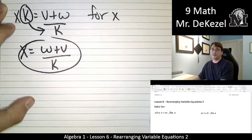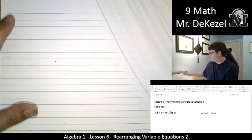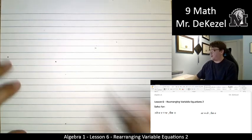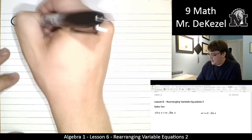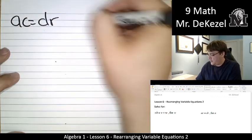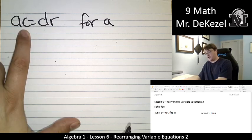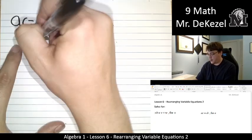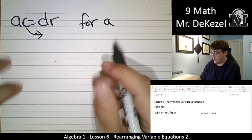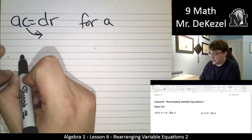v plus w, w plus v, it's all the same. All right, let's do another one. We have ac is equal to dr, and we're solving in this case for a. So the c is on the top. We're going to move it around to the bottom to get rid of it from that side to isolate for a.